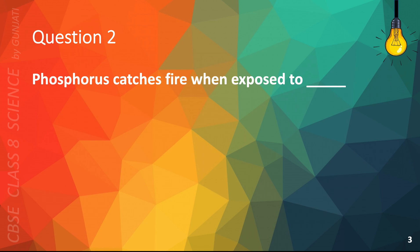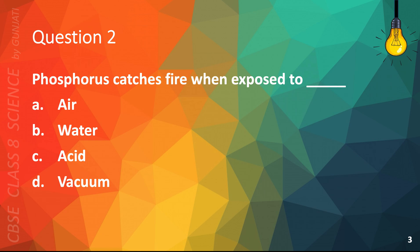Question 2: Phosphorus catches fire when exposed to — A. Air, B. Water, C. Acid, or D. Vacuum. The correct answer is A. Air.